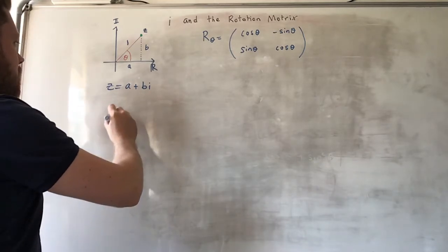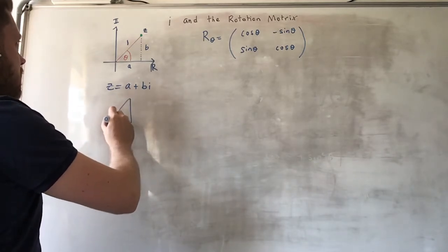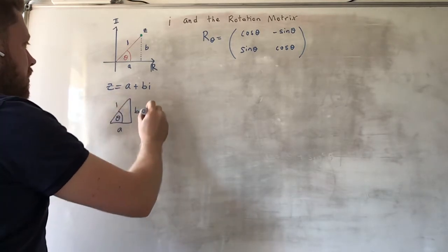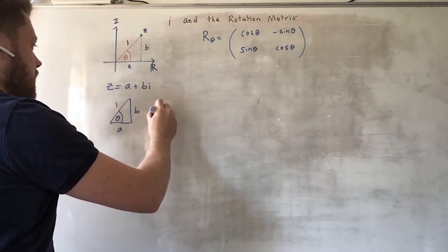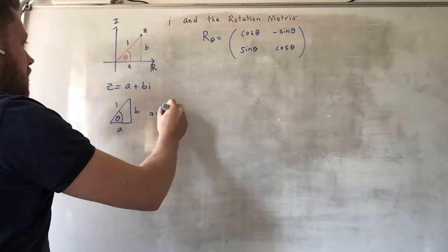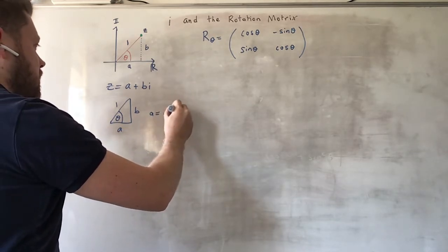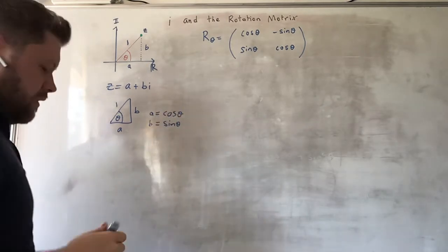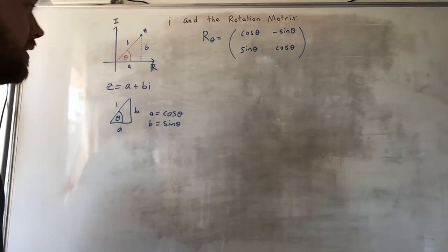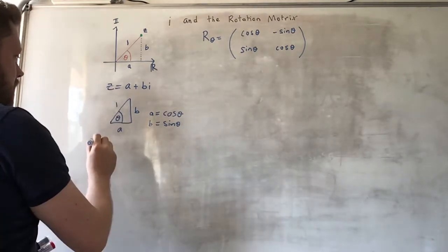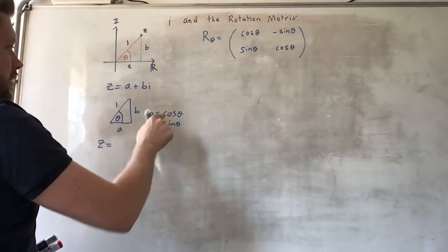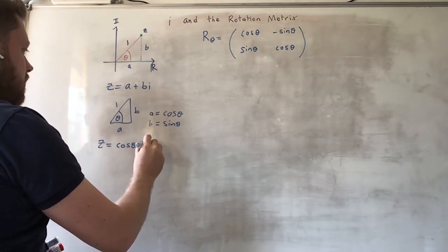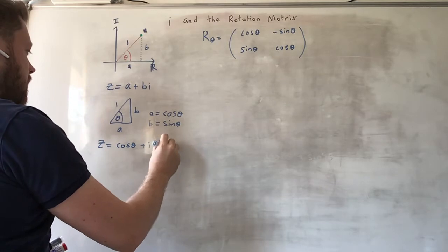Then we have this triangle here, theta, B, A, 1. So we have that A is cosine theta, and B is sine theta. That means we can rewrite Z in terms of these. So we can say that it's cosine theta plus i sine theta.